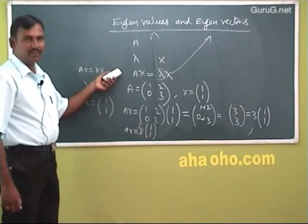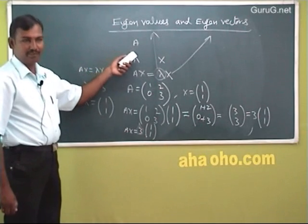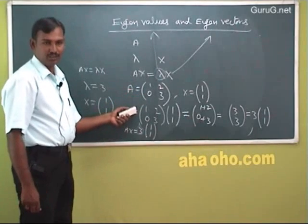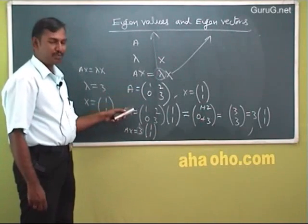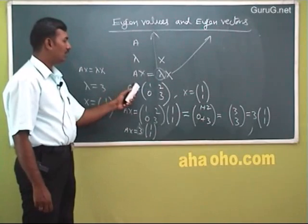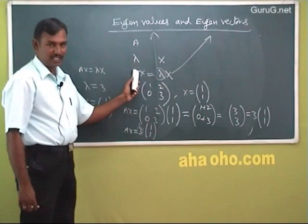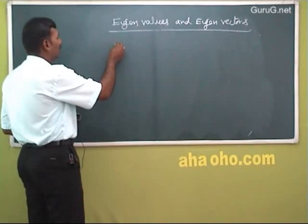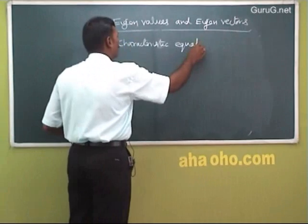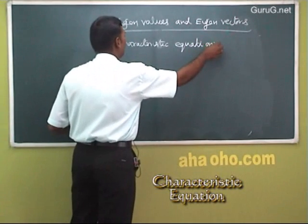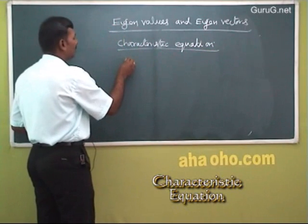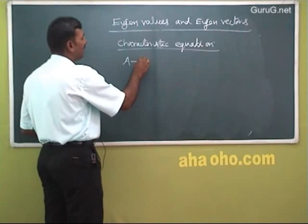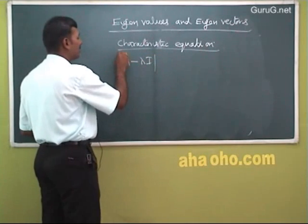There is a procedure for finding eigenvalues and eigenvectors. The direct method is difficult to apply, so we go for another method. First, find the characteristic equation: determinant of (A minus lambda·I) equal to 0.